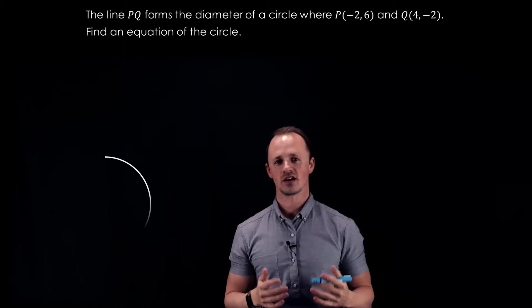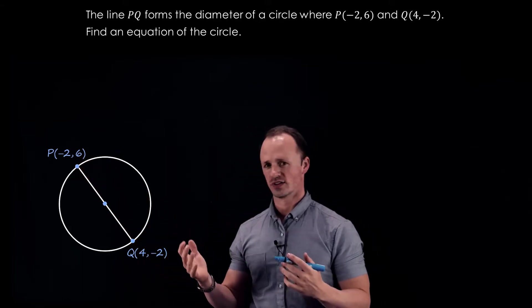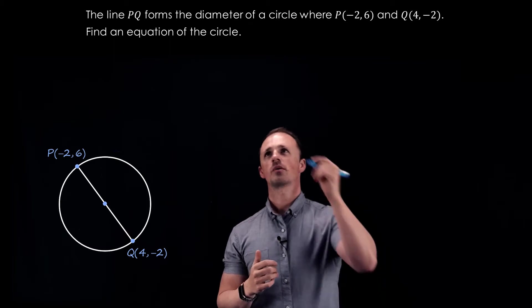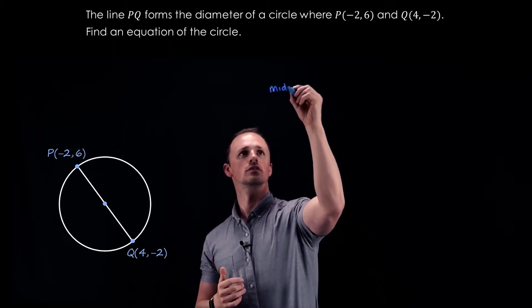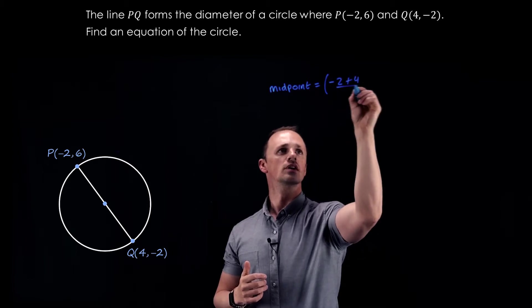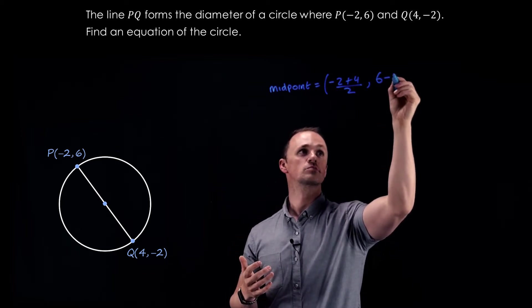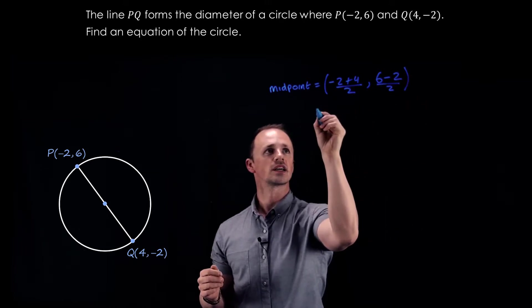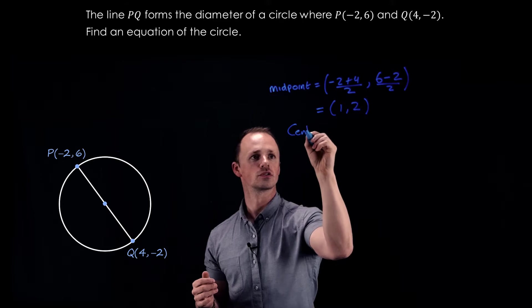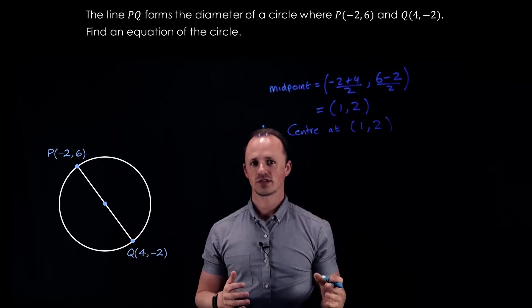In this question we're given two points on the diameter of a circle and we're asked to find the equation of that circle. Since these two points are on the diameter, the center must be the midpoint between them. We find the midpoint by adding the x-coordinates: minus 2 plus 4 divided by 2, and the y-coordinates: 6 plus minus 2 divided by 2, which gives us the center at (1, 2).